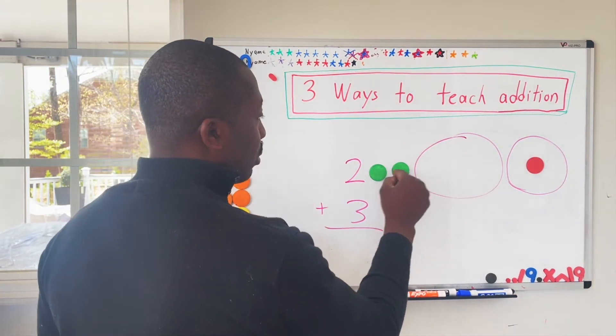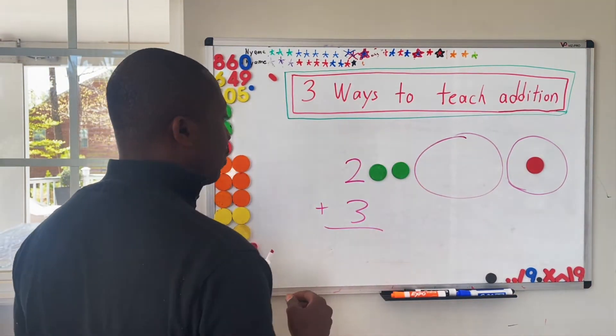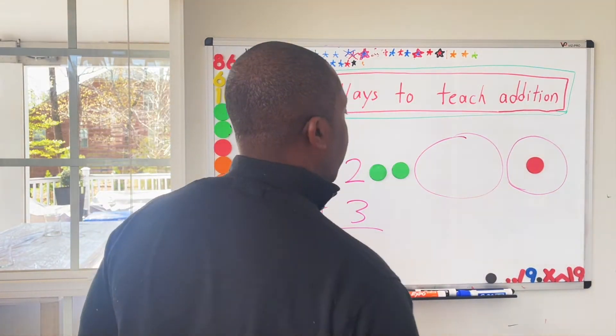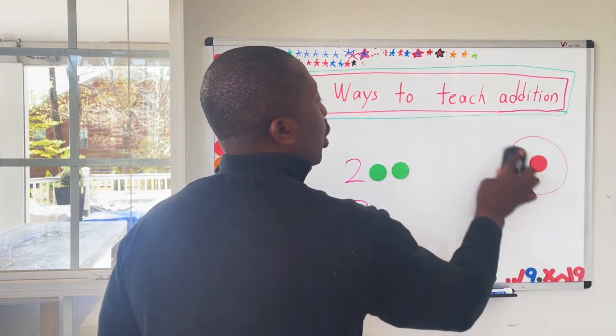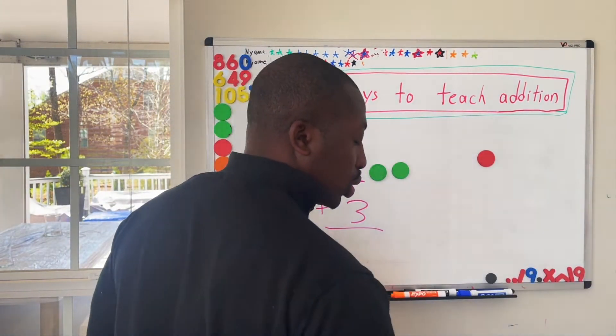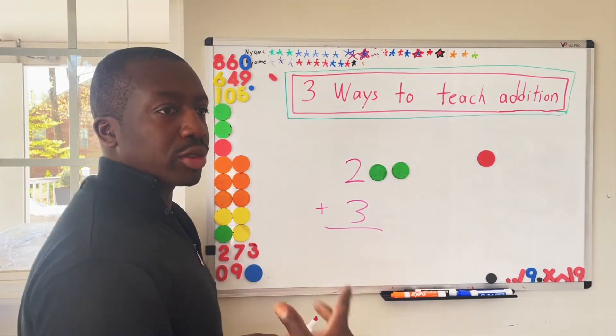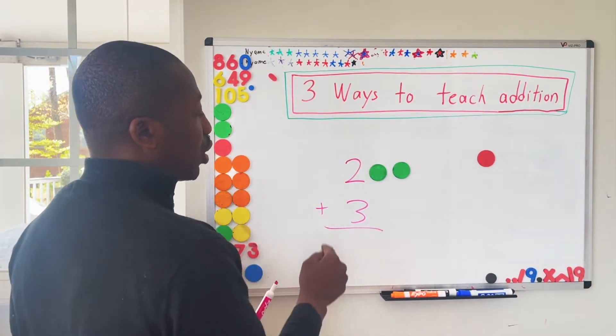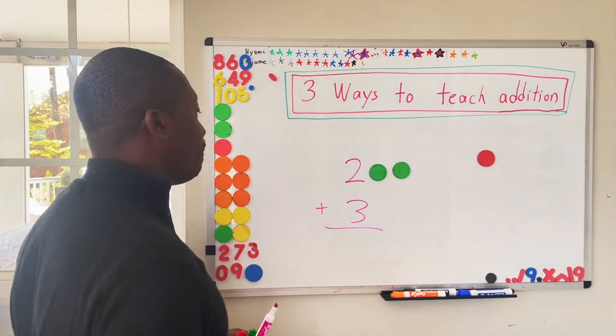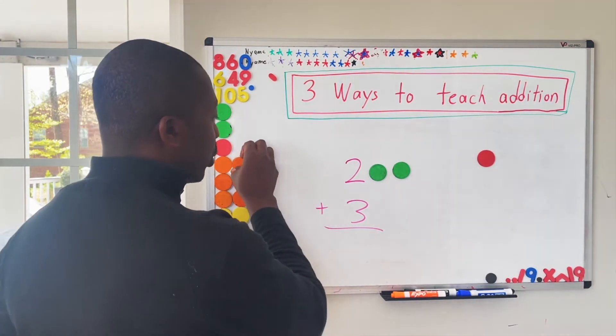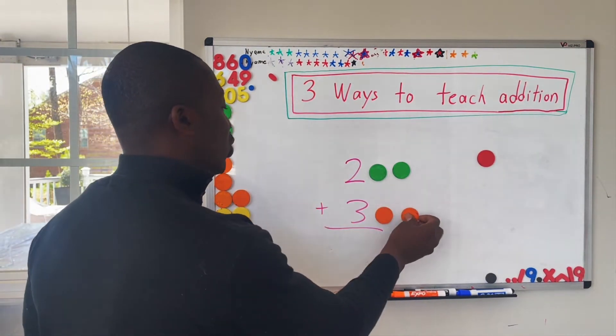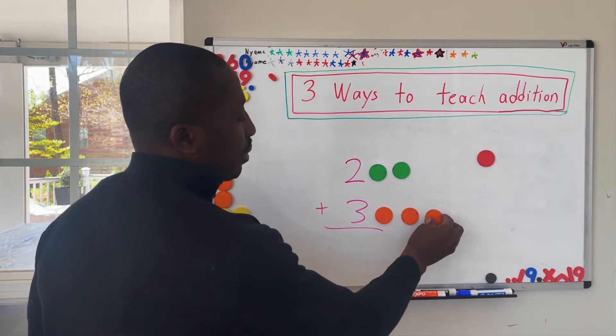So once a child can pick out that there's two objects here, then I would say to the child, if that's two, how many circles or objects corresponds to this number? And at that point, you're hoping your child goes one, two, three.